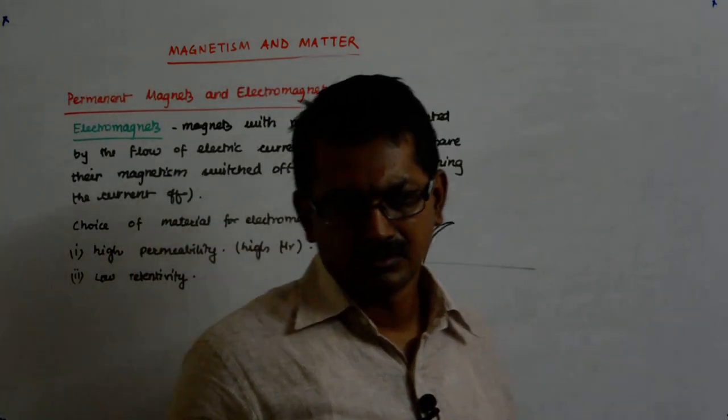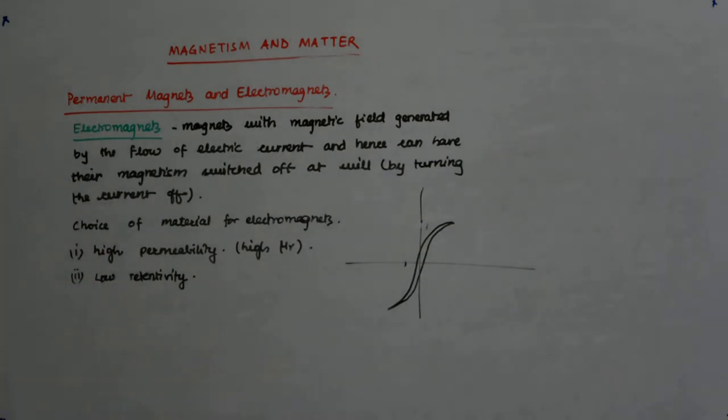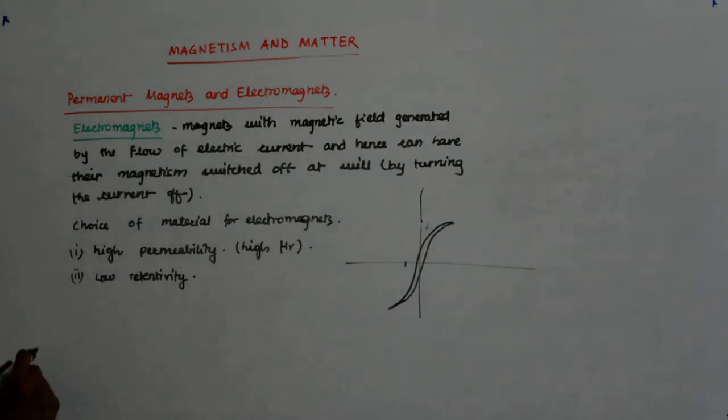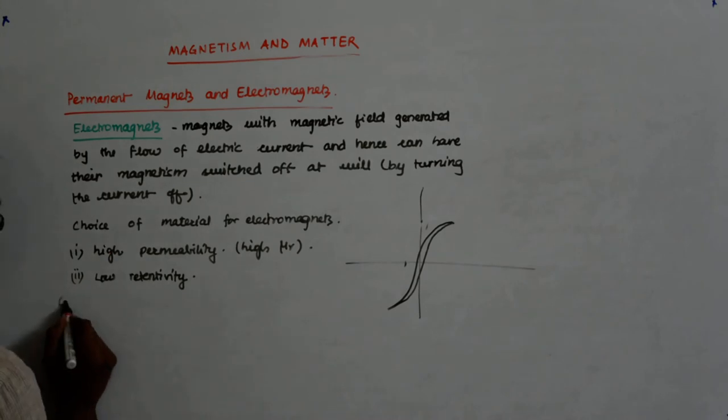And I don't need coercivity also. Why? Because as long as it is a magnet, fine. And the good choice is soft iron. Low coercivity.